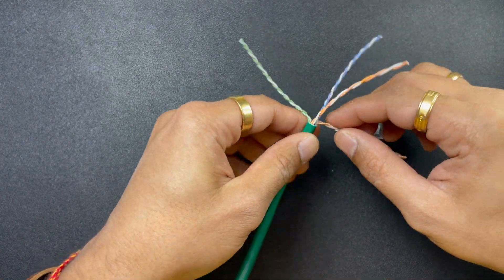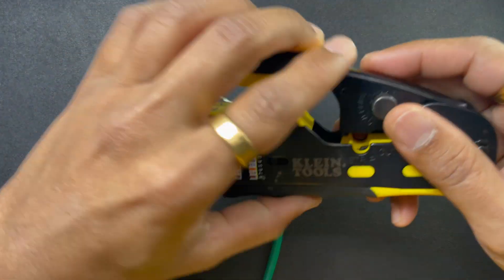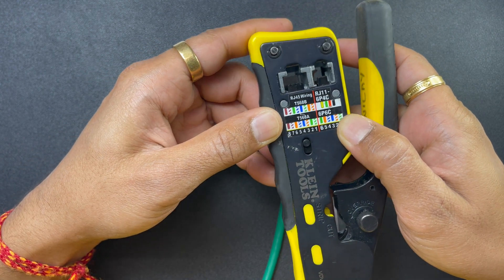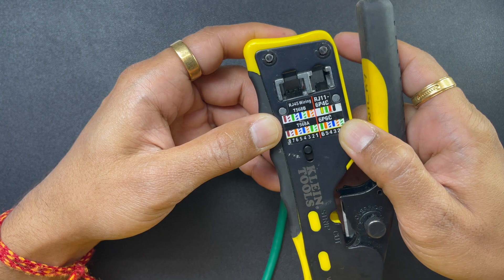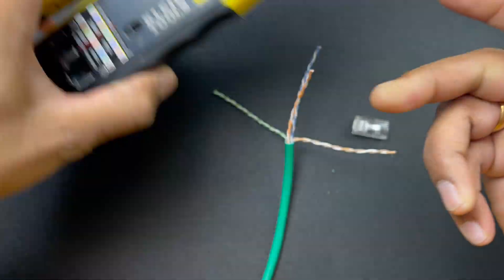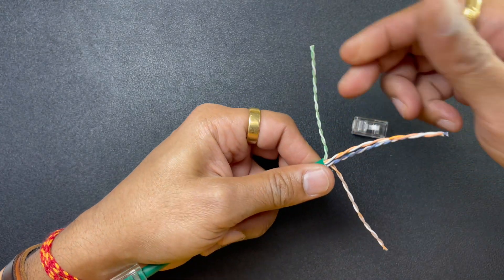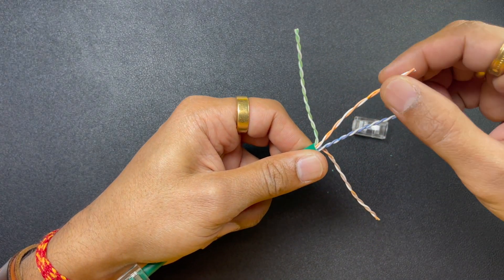If you have this Klein Tool, you have your wiring diagram on it so you won't need to remember it. But it's pretty straightforward - if it's 568A you start with green, if it's B you start with orange.